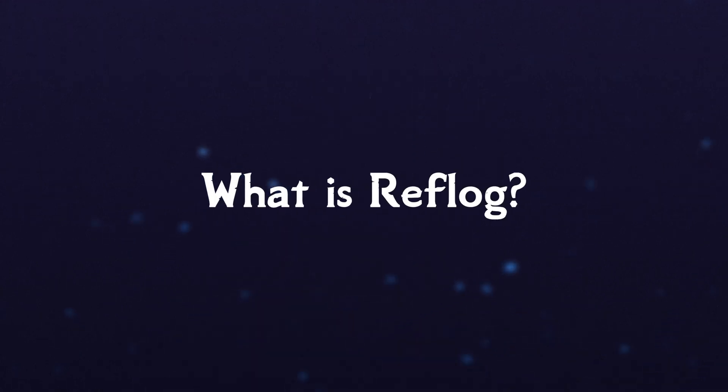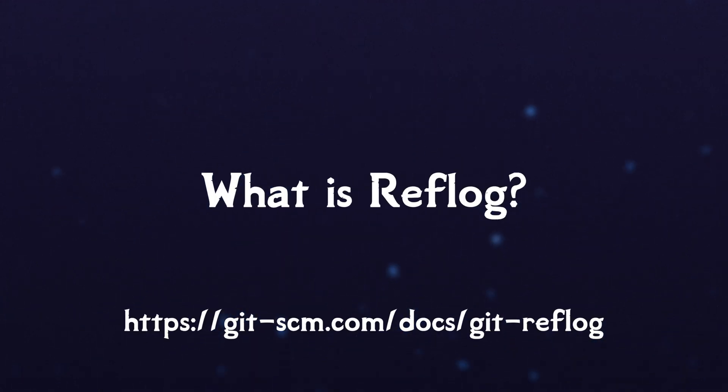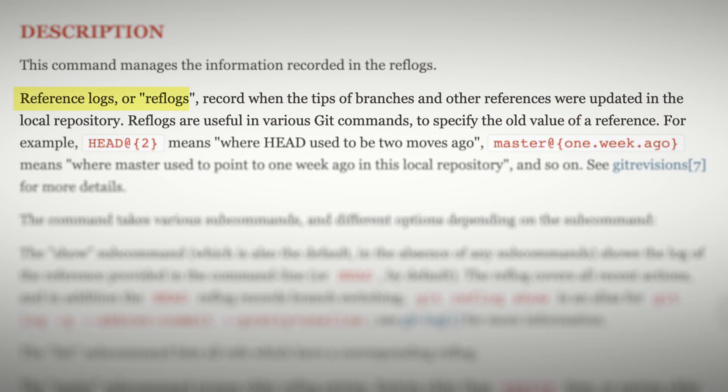So what is reflog? Well, the definition from git SCM is: reference logs, or reflog, records the tip of branches and other references whenever they are updated. Or in layman's terms, reflog tracks the changes of a branch or other references — other references being HEAD. This means as you move your HEAD around from branch to branch or from commit to commit, it tracks every last little step. I personally only ever use reflog to look at how my HEAD has transitioned over time and rescue out a commit if I need to.